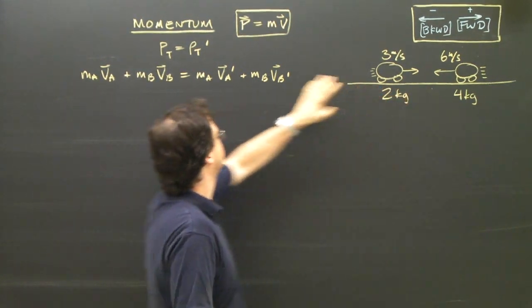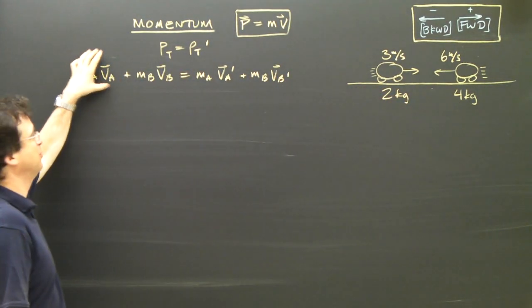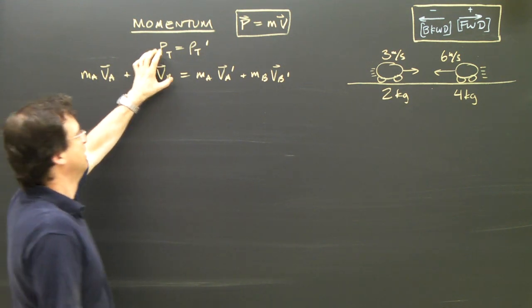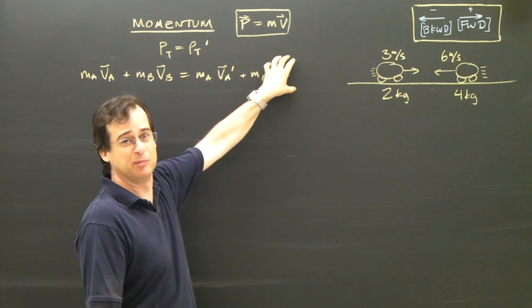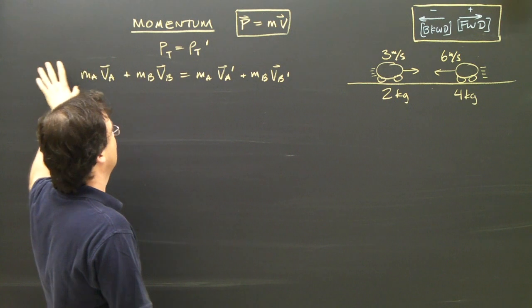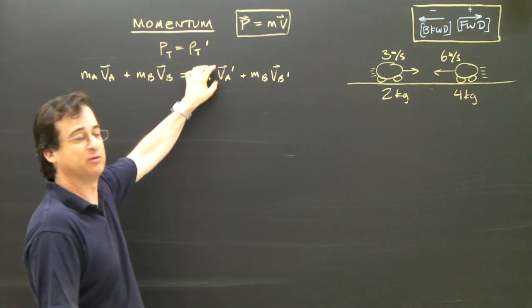It's the same two carts. I've got to account for the momentum of A before, the momentum of B before, the momentum of A afterwards, and the momentum of B afterwards. And if you add this all up, the total before is equal to the total afterwards.